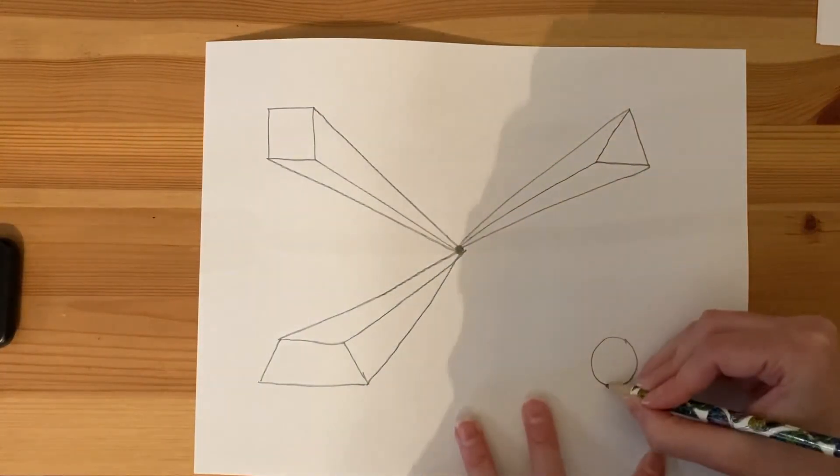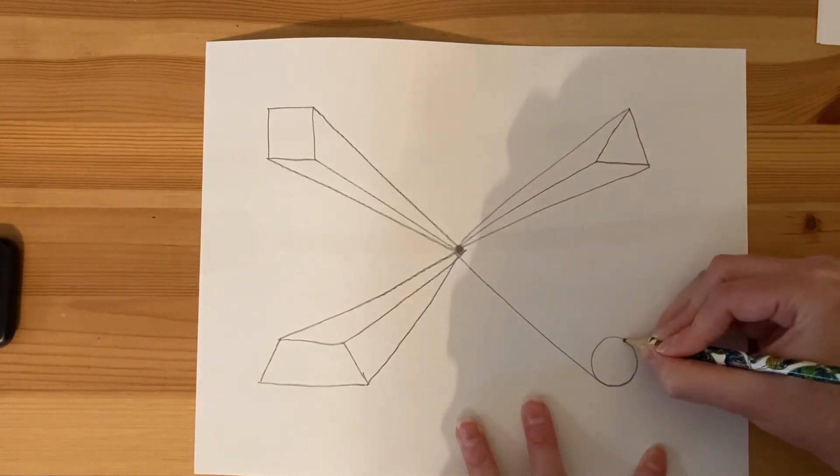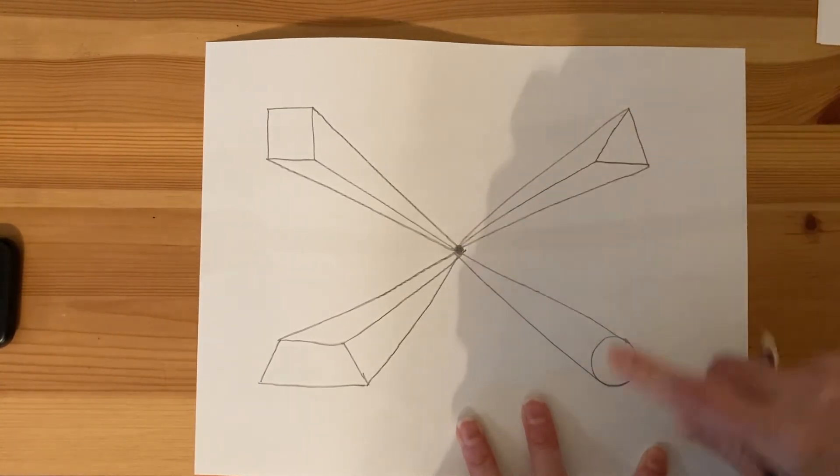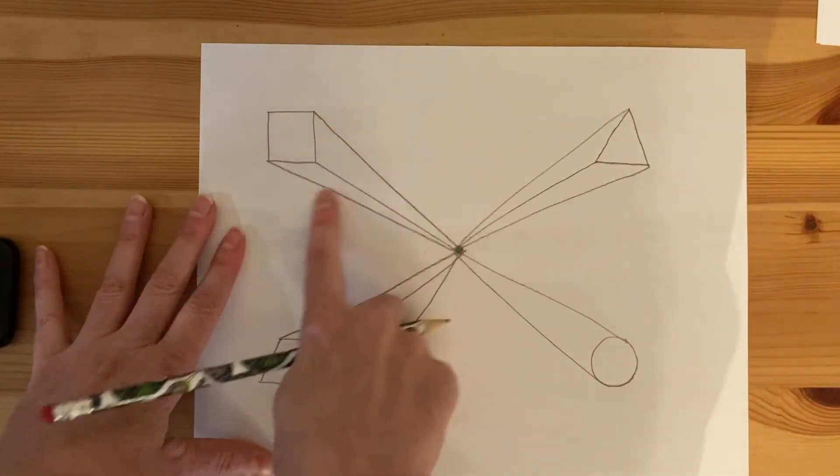All right and I know the lines aren't perfectly straight but that's okay and then my last shape here. So all the lines that I've drawn from my shape go to this point making them three-dimensional.